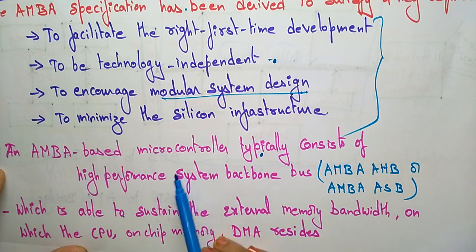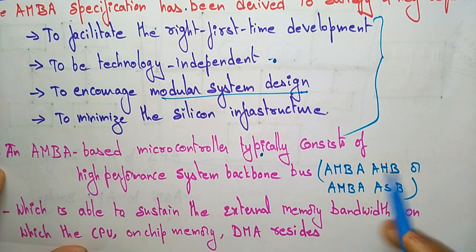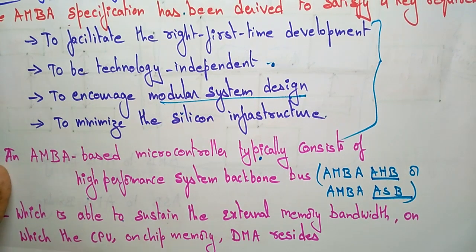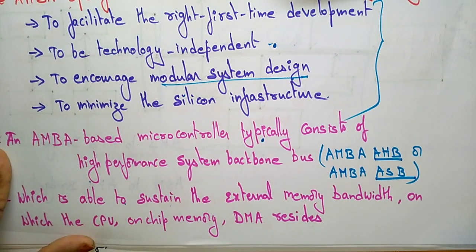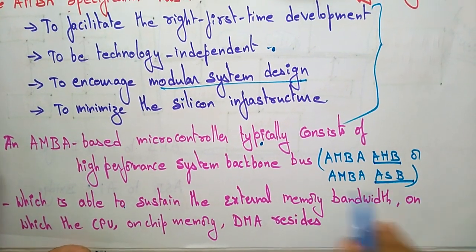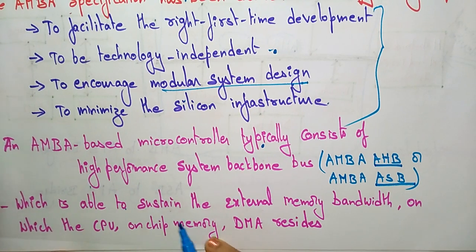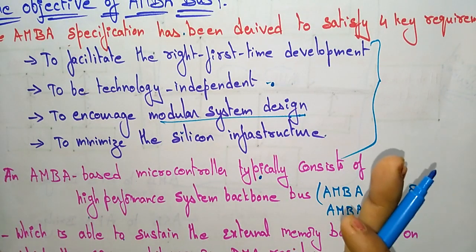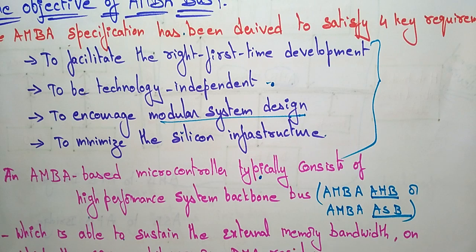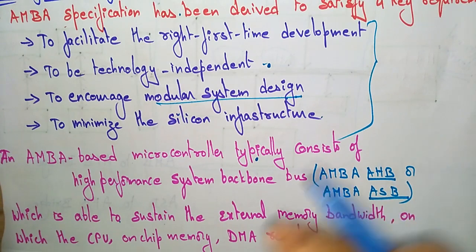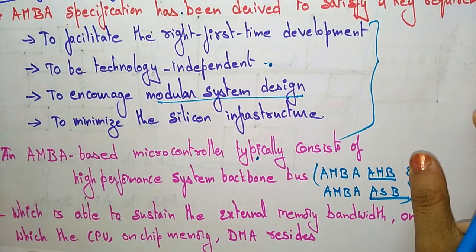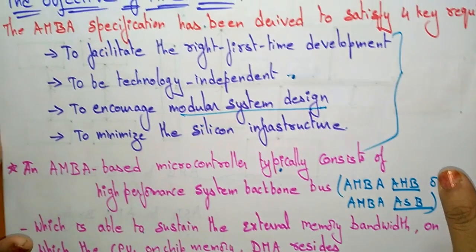An AMBA-based microcontroller typically consists of a high-performance system backbone — that is the AHB or ASB — which is able to sustain the external memory bandwidth on which the CPU, on-chip memory, and DMA reside. In the next video we will discuss the three distinct buses present in AMBA: the Advanced High-performance Bus and Advanced Peripheral Bus. Thank you.